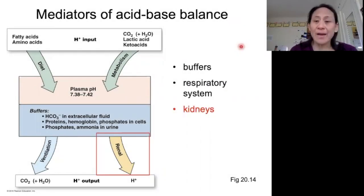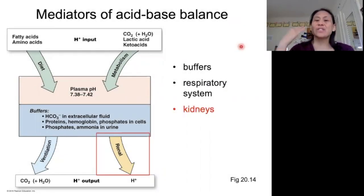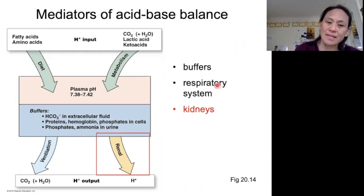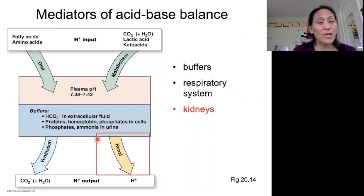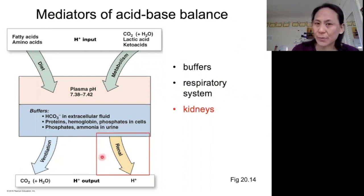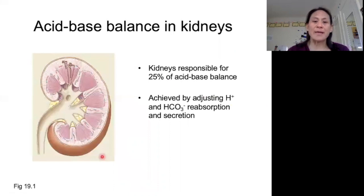We have one last line of defense against acid-base disturbances in our bodies, and that is the kidneys. Let's take a look at what the kidneys do to help us with acid-base balance.